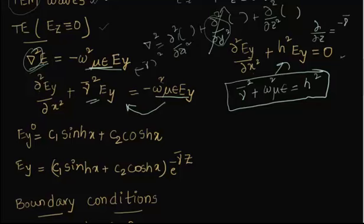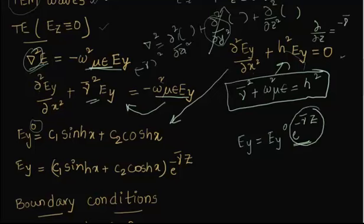This is a simple equation whose general solution is E_Y equal to C1 sin(Hx) plus C2 cos(Hx). We note that E_Y is actually E_Y-not times e to the power minus gamma-bar z, where the exponential term indicates propagation. Gamma-bar can be written as alpha plus j-beta, where alpha is attenuation and beta is the propagation constant.